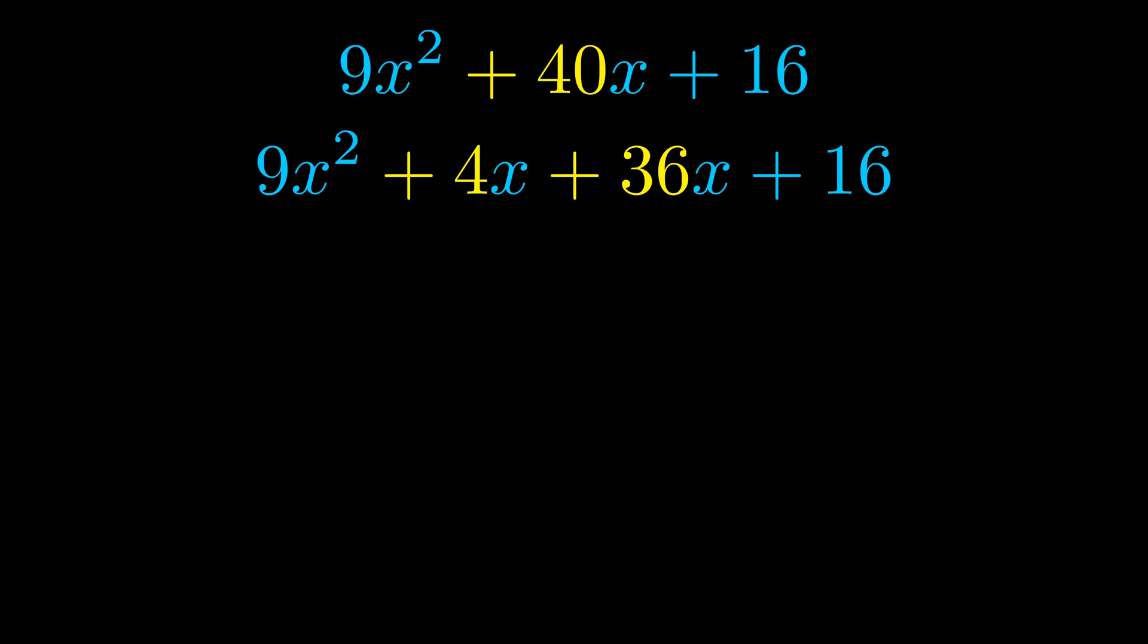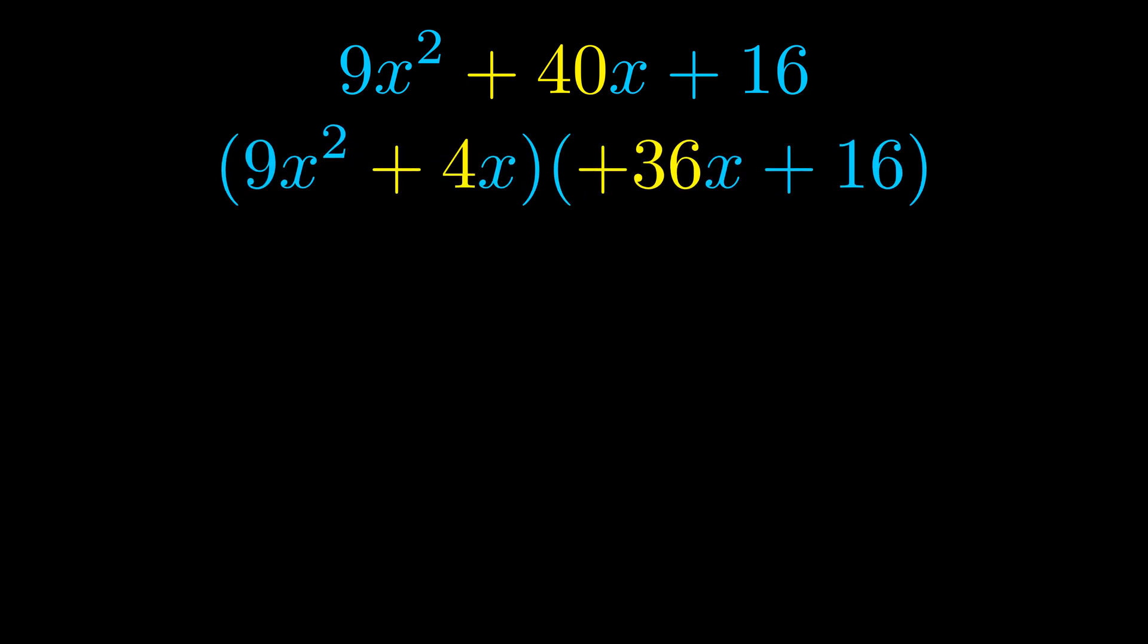Once we've done this we go ahead and we put parentheses around the first term and the last term. And we do that so that we can take the greatest common factor out of both terms. We can see the greatest common factor is now outside in green. Notice also how what remains inside of the parentheses is the same in both cases. The blue values are the same.